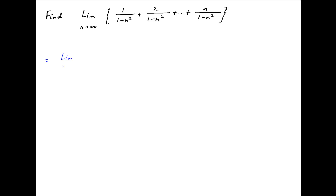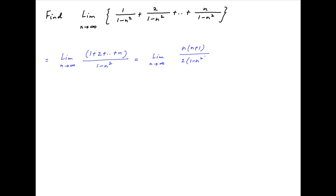The given limit is equal to 1 plus 2 plus 3 and so on till n, divided by 1 minus n squared. The numerator is equal to n times (n plus 1) upon 2, and therefore the given limit is equal to n times (n plus 1) divided by 2 times (1 minus n squared), as n tends to infinity.